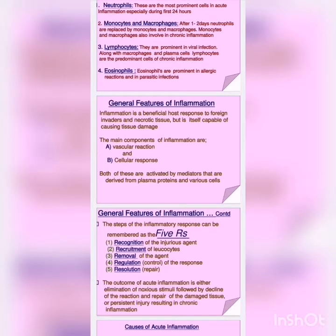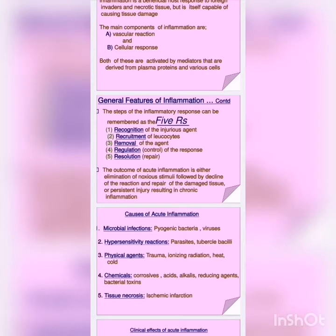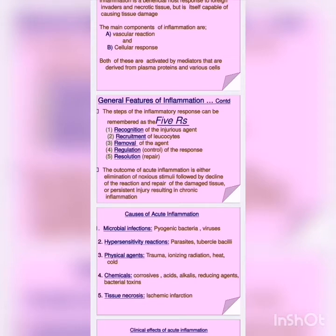General features of inflammation: the main components are number one vascular reaction and number two cellular response. There are five major features. First is recognition of the injurious agent — identify what cause is producing the injury. Second is recruitment of leukocytes — the cells mentioned above come to the site of injury. Third is removal of the agent — with the help of these cells, the cause is removed. Fourth is regulation of the response. Fifth is resolution — the cell returns toward normality, but in some cases of chronic inflammation the cell does not return to normality.